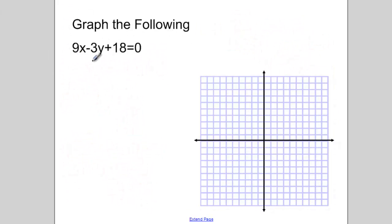So the second example, 9x minus 3y plus 18 equals 0. Why don't you try this on your own? So pause the video now and try this on your own.